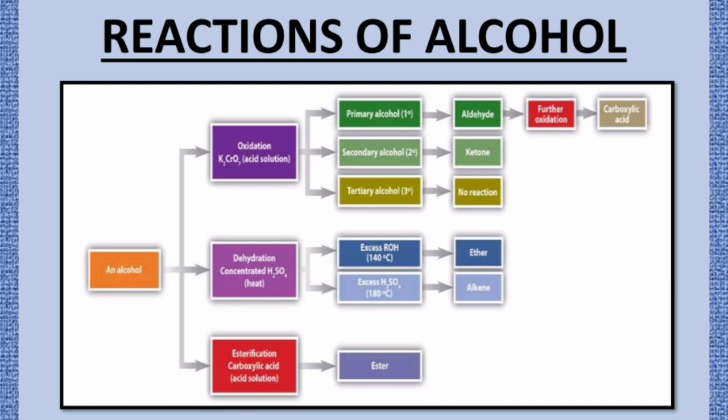When we talk about the O–H bond, secondary alcohol is most reactive, followed by primary, and then tertiary is last. I have shared a flow chart of reactions of alcohols. Regarding oxidation using K2Cr2O7: primary alcohol oxidizes to aldehyde, and further oxidation gives carboxylic acid. Secondary alcohol oxidizes to ketone. Tertiary alcohol shows no reaction upon oxidation.